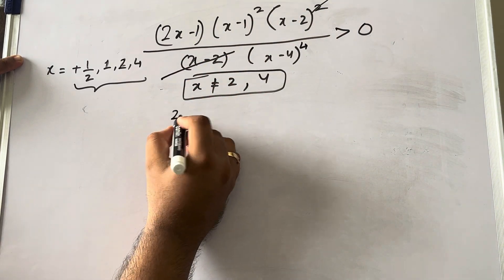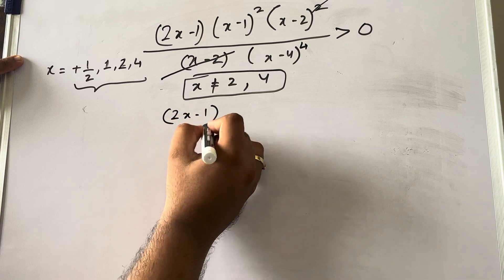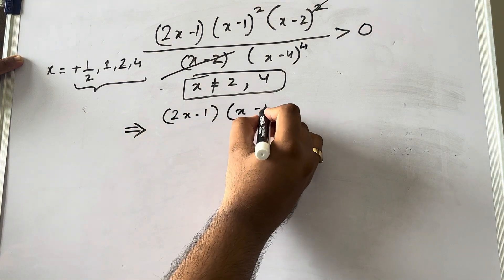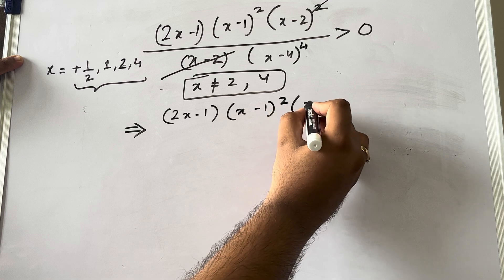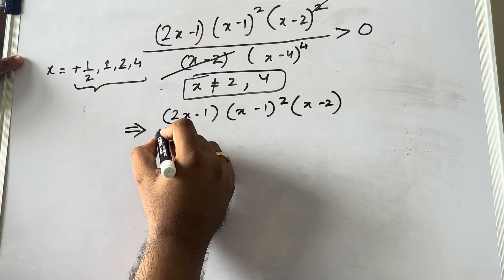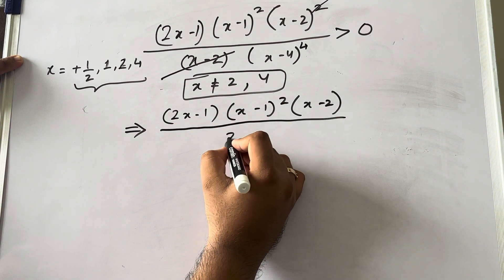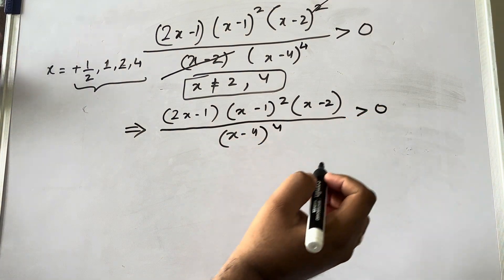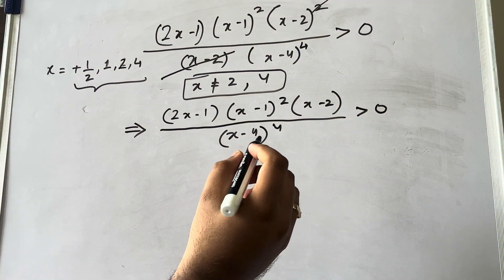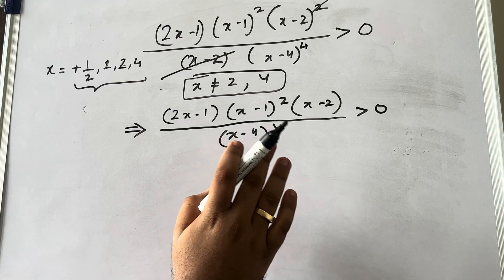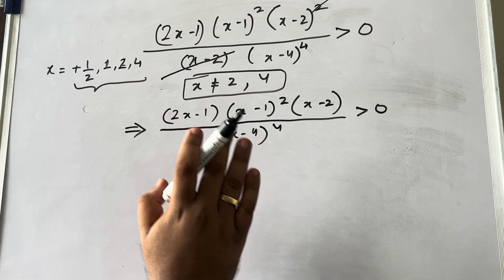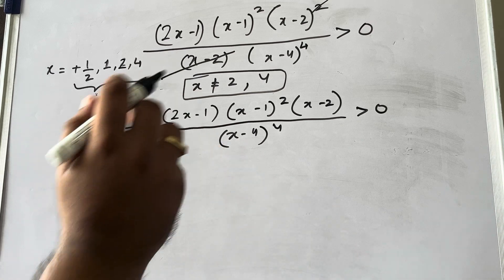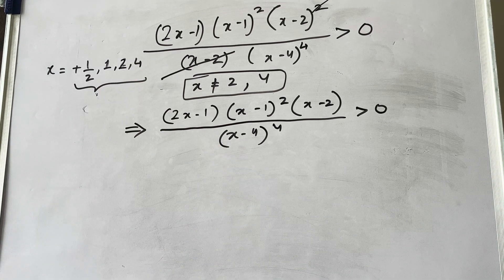So the simplified equation is: [(2x − 1)(x − 1)²(x − 2)] / [(x − 4)⁴] > 0, knowing that x ≠ 2 and x ≠ 4. The critical points remain 1/2, 1, 2, and 4. Let us draw the number line and plot these four critical points: 1/2, 1, 2, and 4.